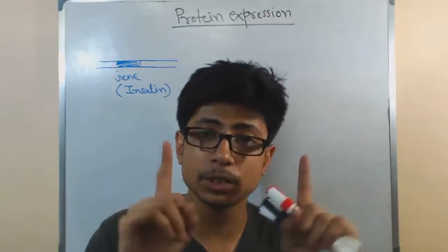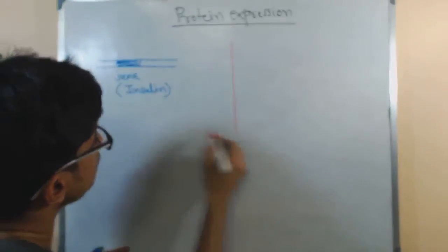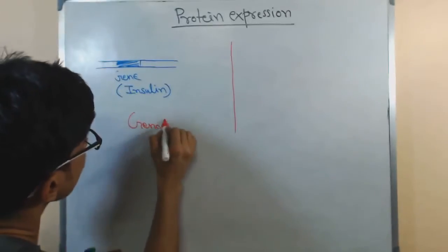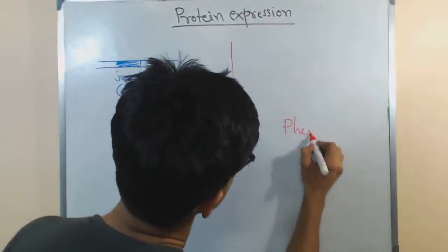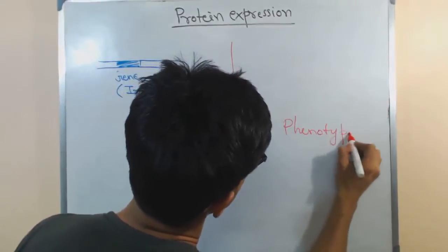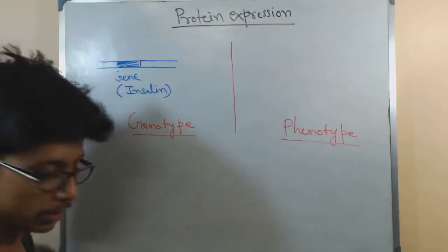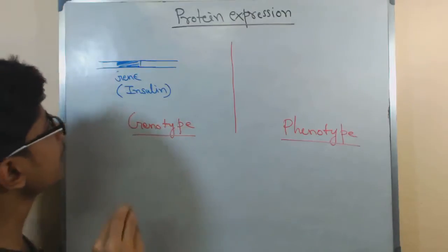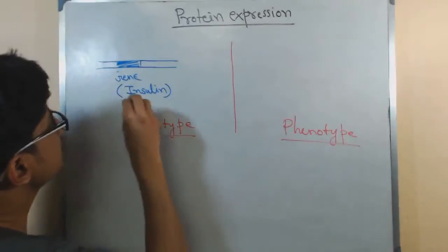Because remember there are two different zones of it. One zone is the genotype, genotypic zone. The other one is the phenotype. So those things are there and there is an interaction between genotype and phenotype possible. Now here in the genotype we have the gene inside the cell, inside the nucleus.